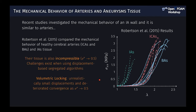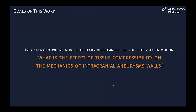When simulating the motion of incompressible tissues, a challenge exists using displacement-based segregated algorithms, especially due to volumetric locking, which causes unrealistic small displacements and deterioration of convergence as the Poisson ratio tends toward the 0.5 purely incompressible limit. In this scenario, the main goal of this work was to use numerical techniques to assess the effect of tissue compressibility using a nearly incompressible modeling approach on the stresses and strains of intracranial aneurysm walls.